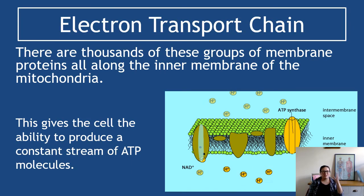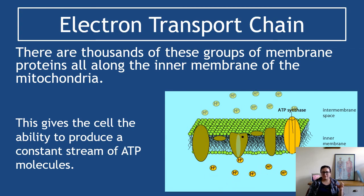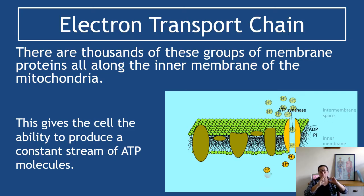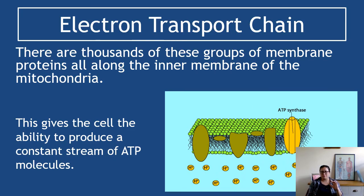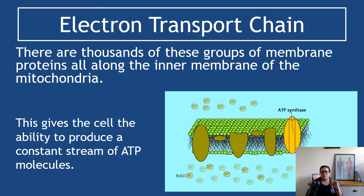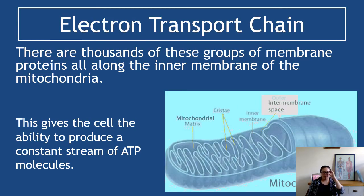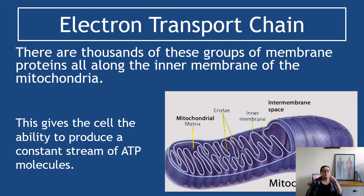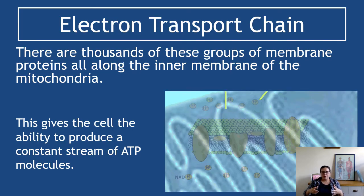Now there's thousands of these groups of membranes, sorry groups of proteins all along the inner membrane of mitochondria. The one we looked at, we just looked at one of them on the membrane. The idea is there's thousands and thousands and thousands of them. And I love this little gif because it shows exactly what happens during this stage.